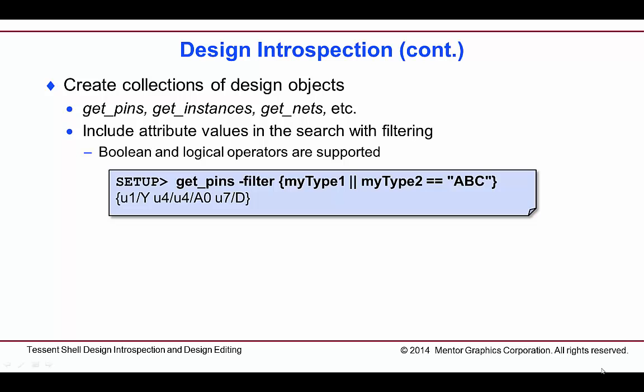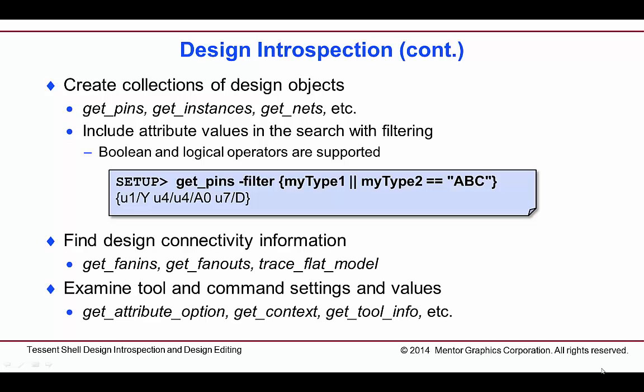When creating collections of design objects with the various GET commands, you can also specify filtering equations that evaluate the values of the attributes on those objects. The example shows getting all pins with either attribute MYTYPE1 or MYTYPE2 equal to the value of ABC. Design connectivity can also be examined by getting a pin's fan-in or fan-out, or by tracing through the flattened design data model.